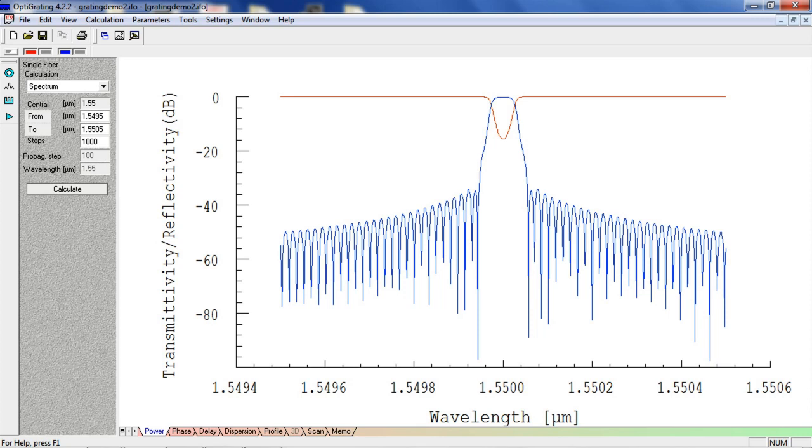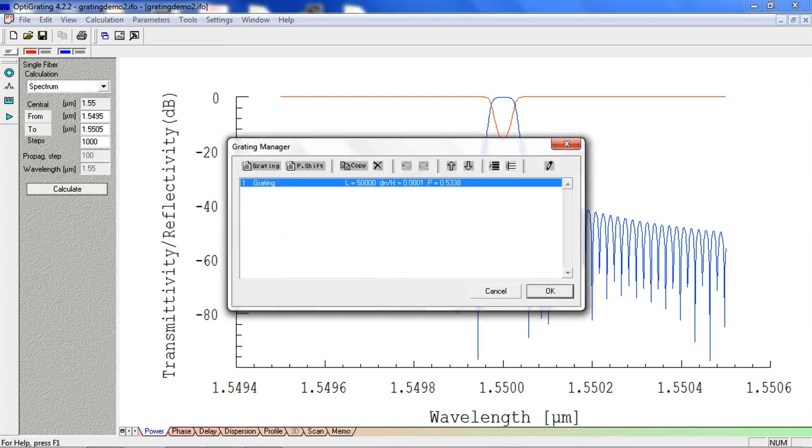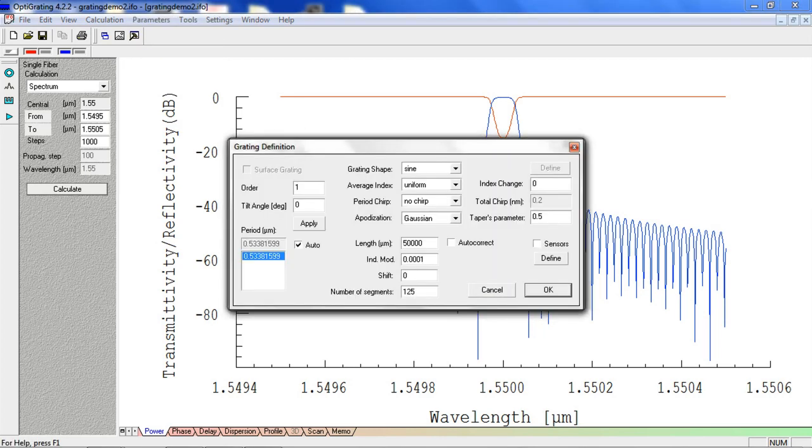The transmission spectrum could be broadened by chirping the grating. This is to say, to change the period of the grating gradually over the grating's length. If we go to parameters, grating, and double-click the grating again, and under Chirp, select Linear, we can see an example of a linear chirp.